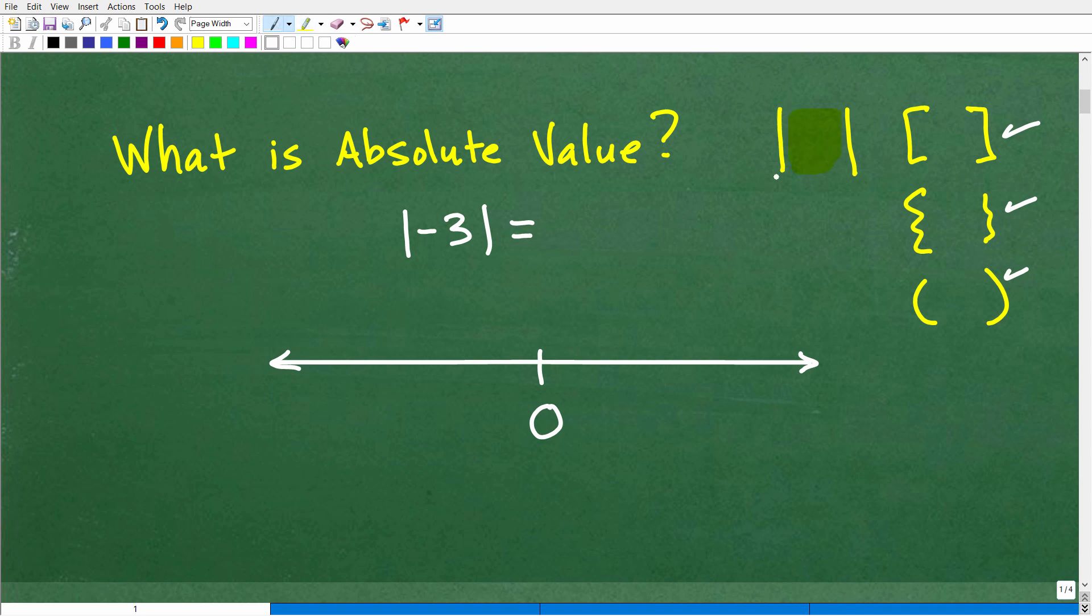That means that we want to find the absolute value of a number. So here, this is indicating, find the absolute value of negative three. Okay, so that's what the notation looks like. That's how you recognize you're dealing with absolute value. But I still haven't answered the question, what is absolute value? Well, absolute value is, and this is very, very simple, the distance a number is from zero on a number line.